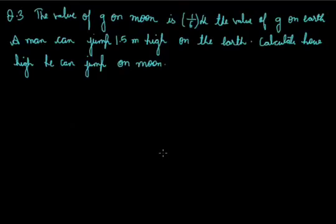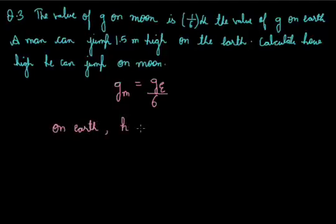In this question we are given that g on Moon, the acceleration due to gravity, is equal to 1/6 of g on Earth. It is said that on Earth the height attained by a person, H, is 1.5 meter. Let us consider that on Moon the height attained, let it be x meters.